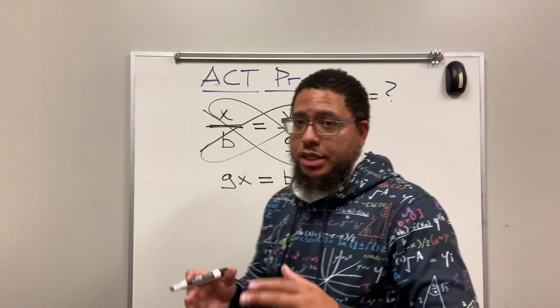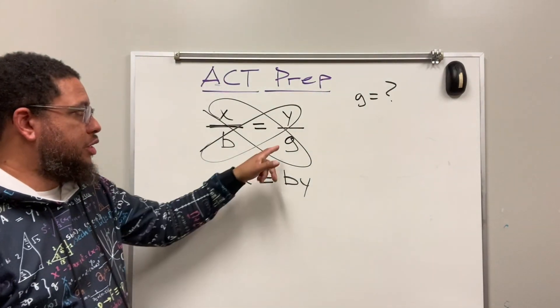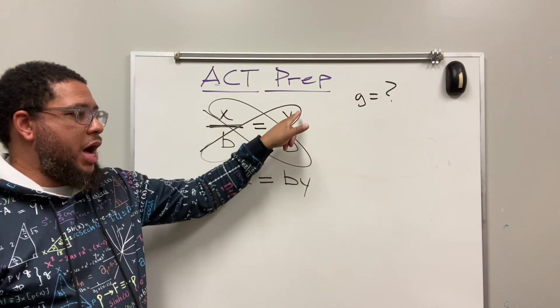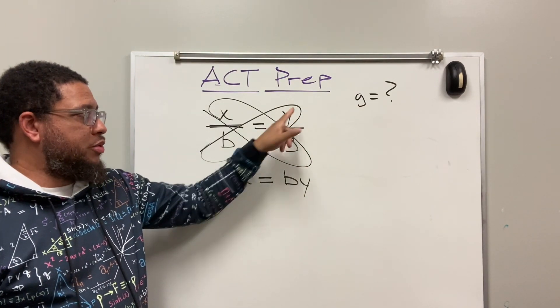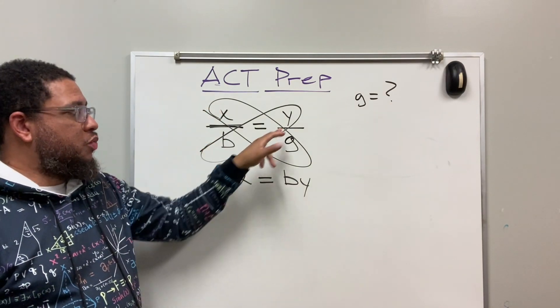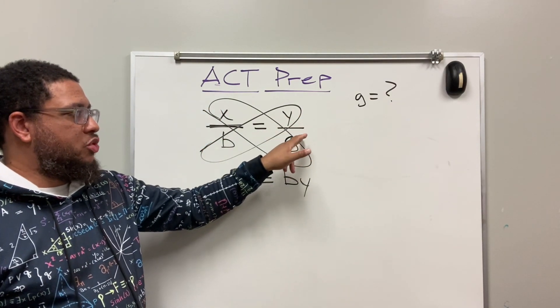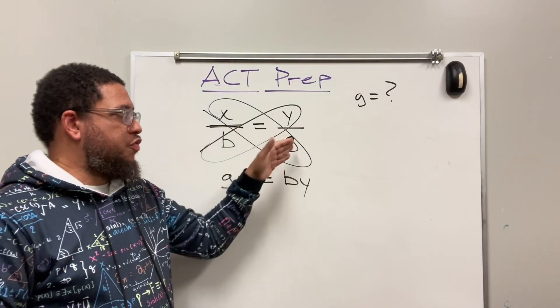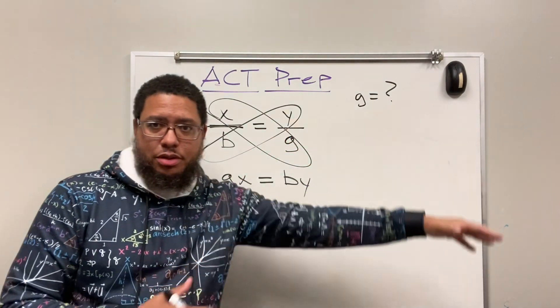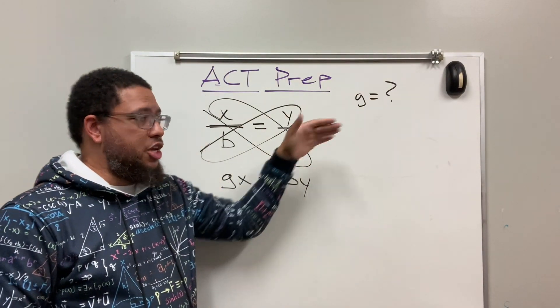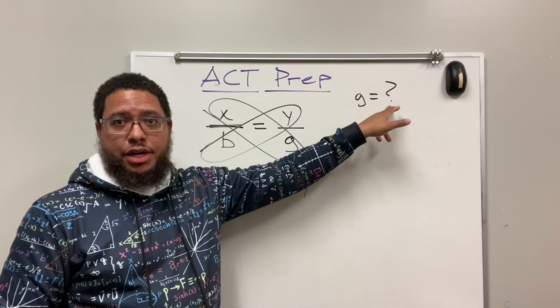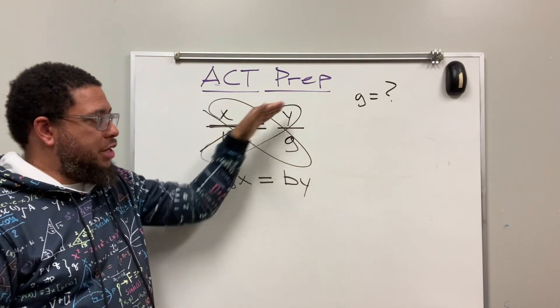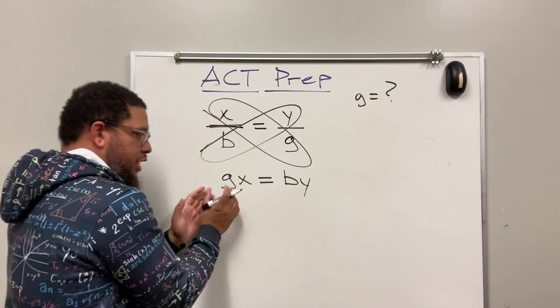And again, we're trying to find a general formula, meaning we're trying to solve for G. G represents, we're trying to find a general formula for the cost of this many apples, of Y apples. We know that this many apples cost this much. We want to know how much does this many apples cost? So we want to know what this is. And we want the formula for that. So the formula means this is equal to something. That means in order to know what this is equal to, we got to solve for this. So we got to solve for G.